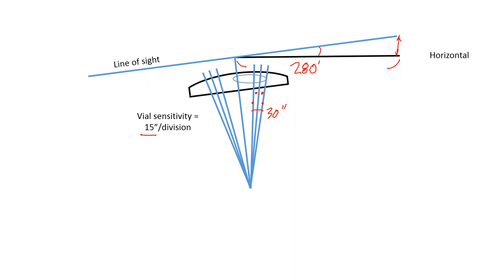Going between the centered position of the end of the bubble and the displaced position of the end of the bubble, 30 seconds. So 30 seconds is the angle here and we're going to call that angle theta. This distance 280 is a horizontal distance and we want to know the vertical distance.